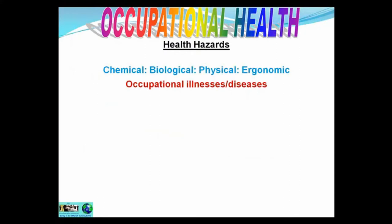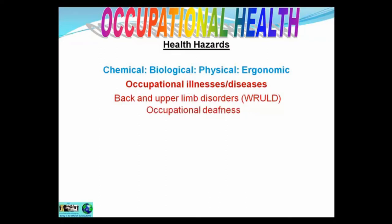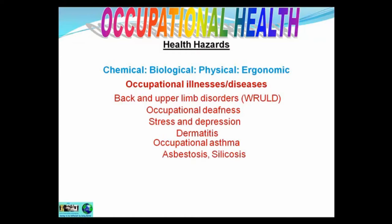The different types of illnesses and diseases. We could get back on upper limb disorders — WRULD stands for Work Related Upper Limb Disorder. That's anything from the waist up to the neck, affecting your arms, wrists, fingers, shoulders, neck, spine, including your discs. Occupational deafness. Stress and depression. Dermatitis. Occupational asthma. Asbestosis. Silicosis.